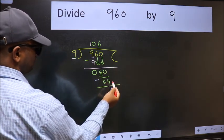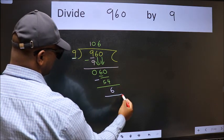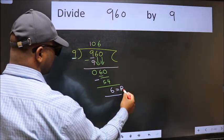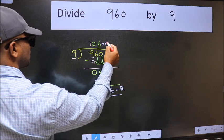No more numbers to bring it down, so we stop here. This is our remainder and this is our quotient.